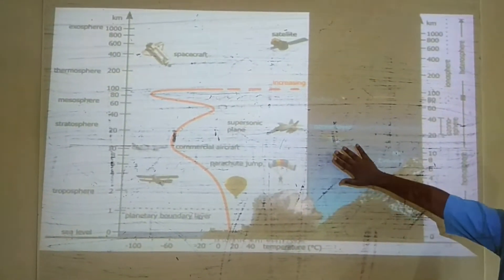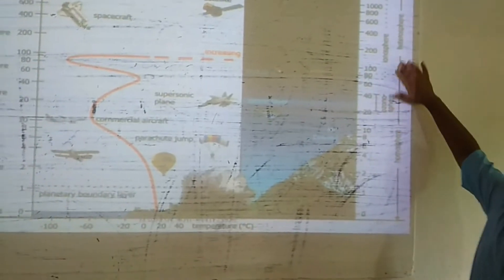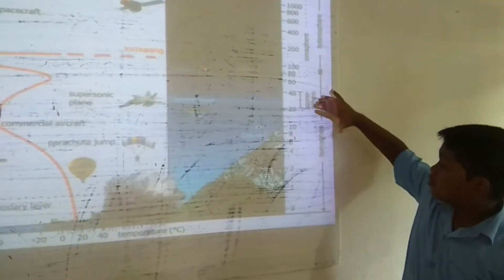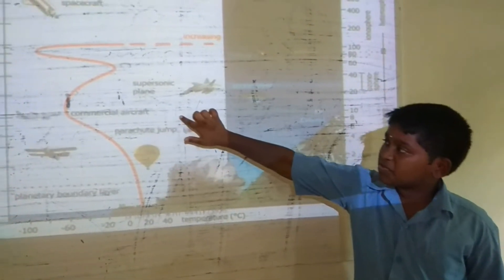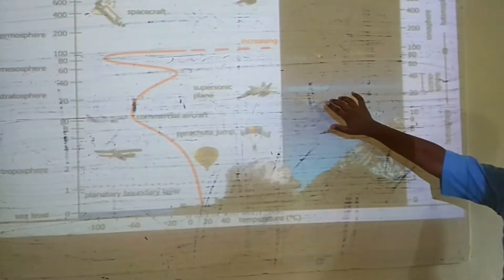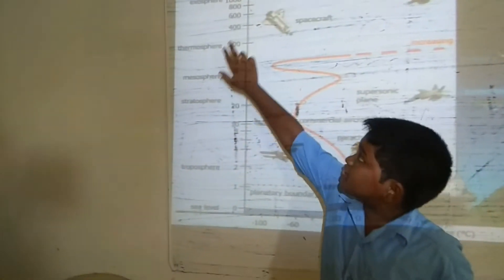The atmosphere is broadly divided into two spheres: Homosphere and Heterosphere. Homosphere contains three spheres in it: Troposphere, Stratosphere, and Mesosphere. The Heterosphere contains two spheres: Thermosphere and Exosphere.